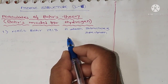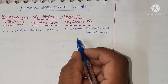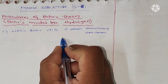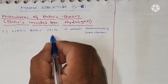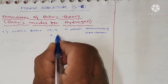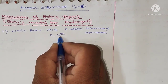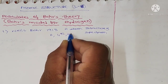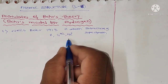Niels Bohr explained the hydrogen atom structure and hydrogen-like atom structure — atoms that contain only one electron. Hydrogen contains one electron, and so do lithium plus 2 and helium plus. These are all hydrogen-like species containing only one electron.